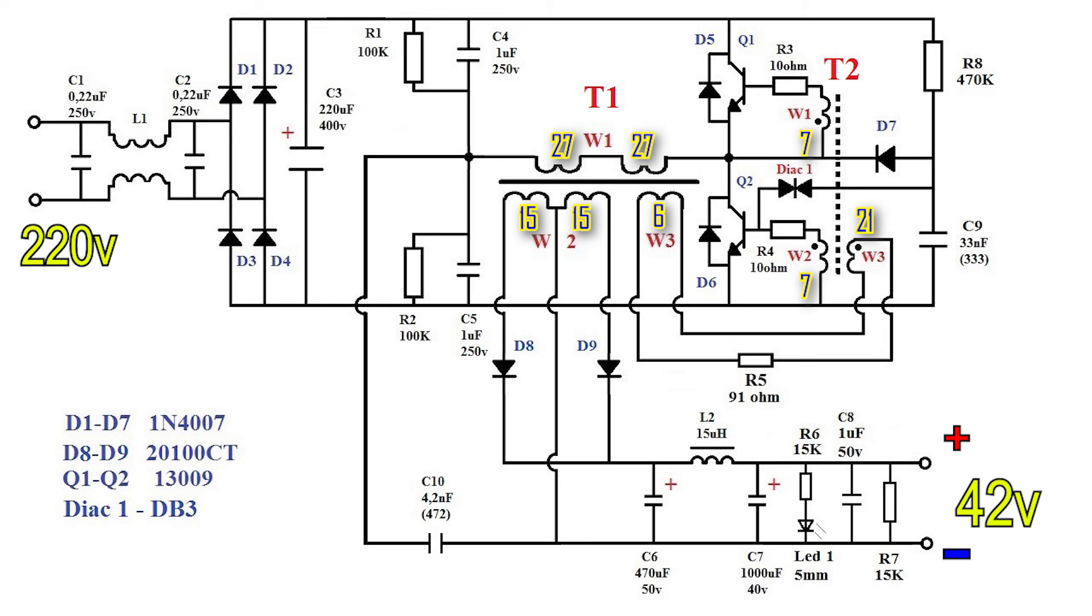When the voltage on the capacitor reaches the desired limit, the DB3 dinister opens through it. Capacitor C9 is immediately discharged to the base of transistor Q2. The transistor opens briefly allowing current to flow to the primary winding T1.